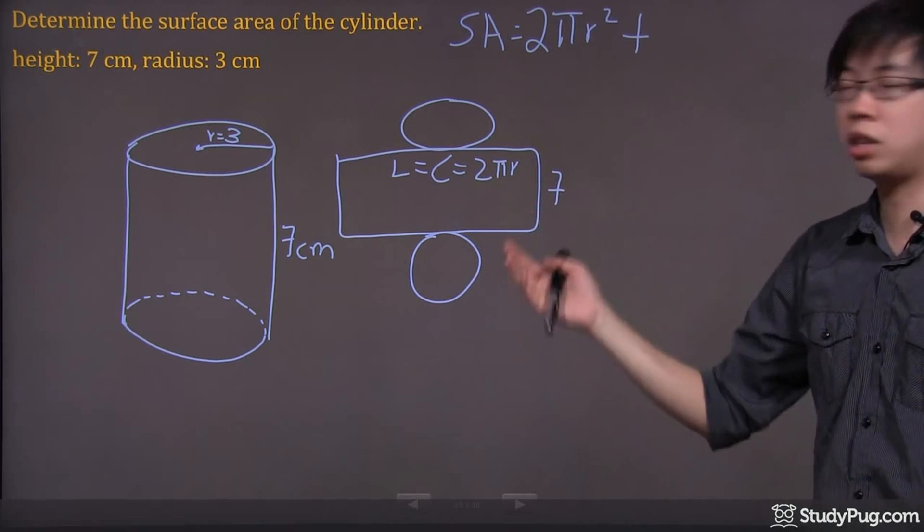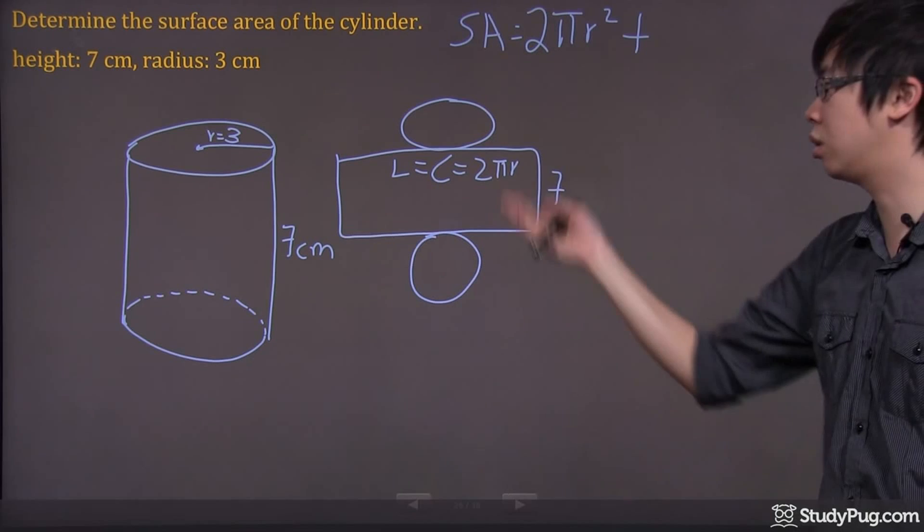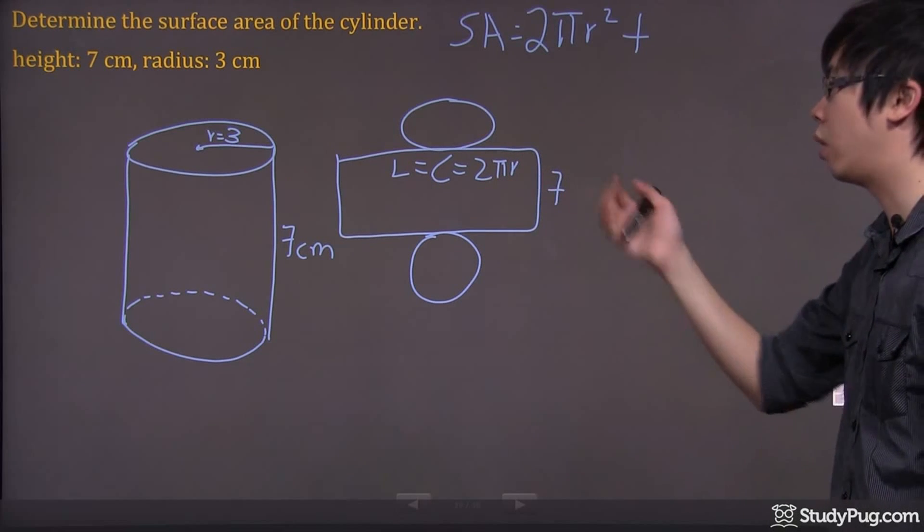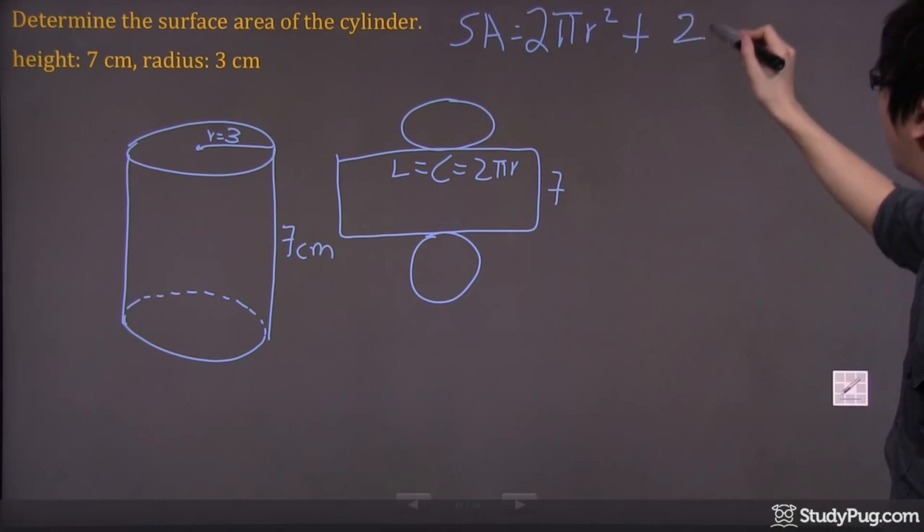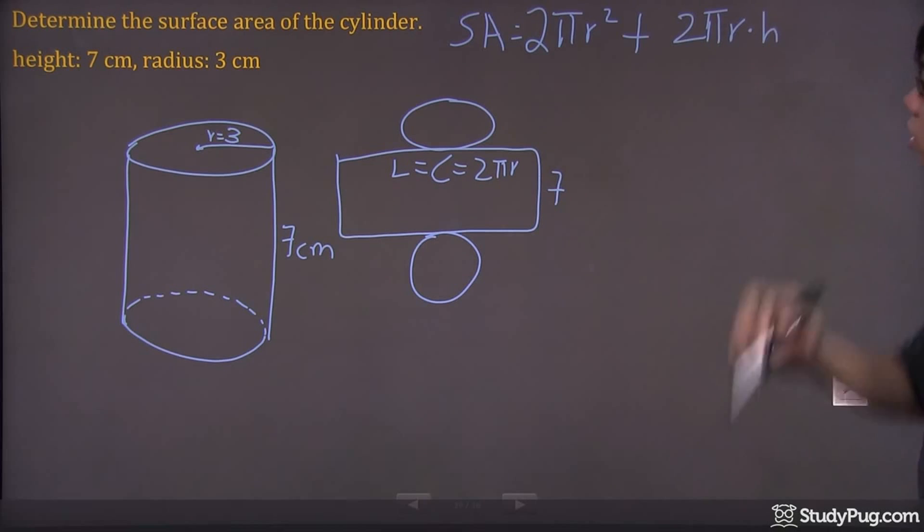At the end, we're not taking the length times the width. It's actually the 2 pi r times the width. So, I'm going to put down the 2 pi r right here, and I'm just going to times the height in this equation here.